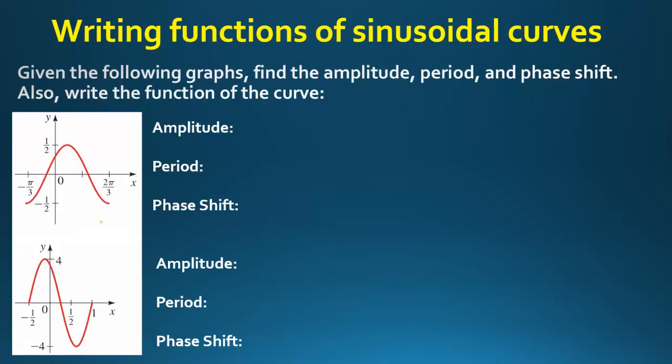Now, based on these graphs, we should be able to write a function from what we see. Looking at this graph, we can tell it's a cosine. We may give you graphs showing more than one period, so there could be more than one valid answer — since sine and cosine graphs can be transformed to look identical.